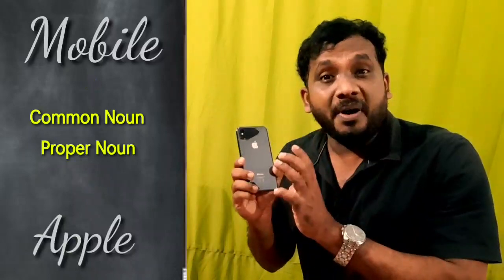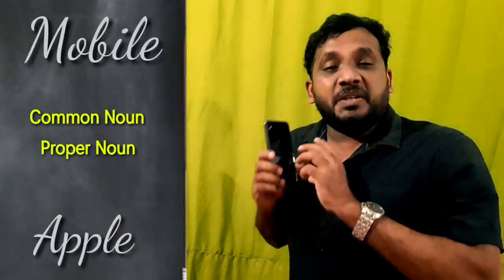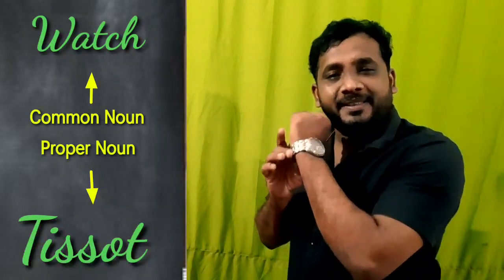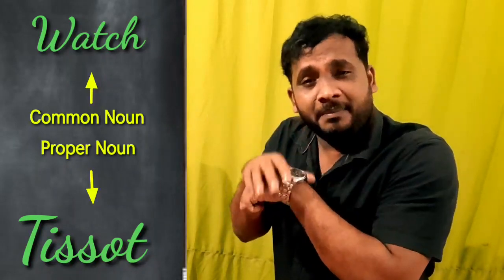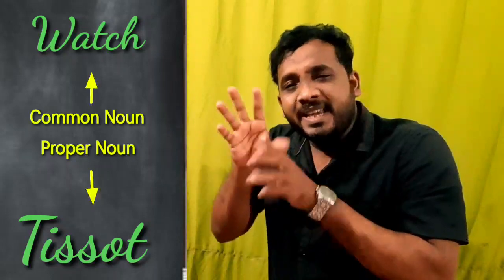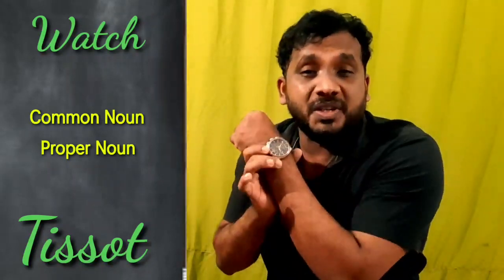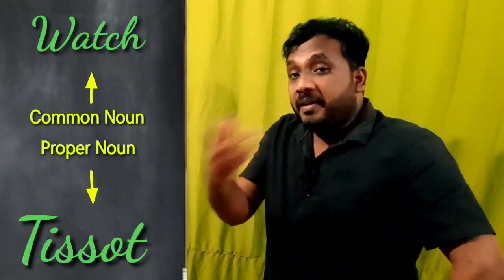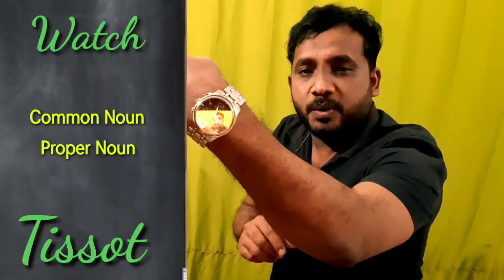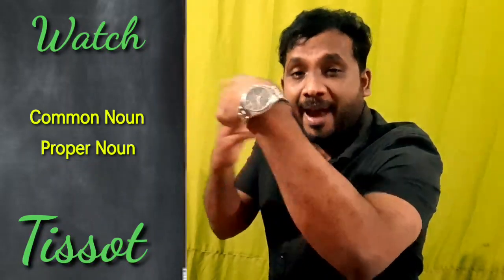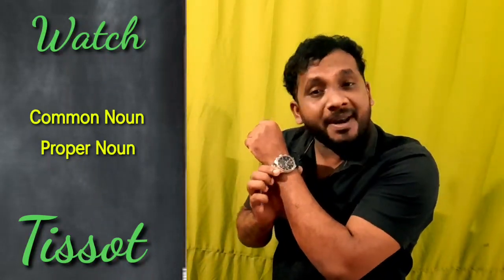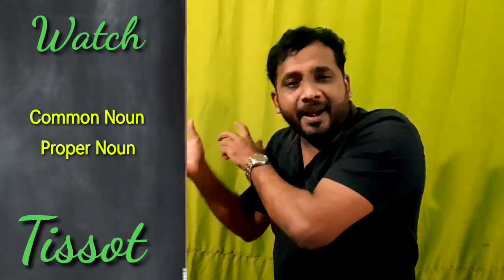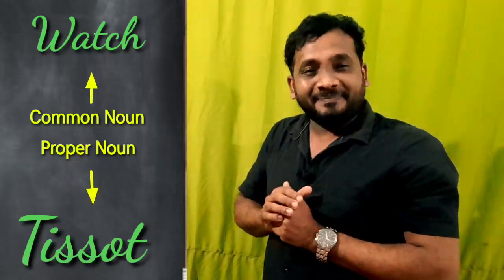This is a watch — we use a watch to know the time. We use so many brands, but in general the common noun for watch is 'watch' itself. But when we say a brand — for example, T-Sort, HMT, Rado — those come under proper noun. So 'watch' is the common noun, and T-Sort or Rado is the proper noun.